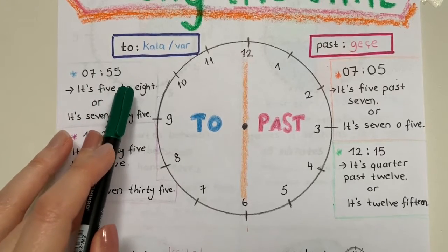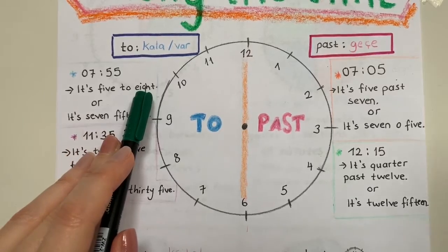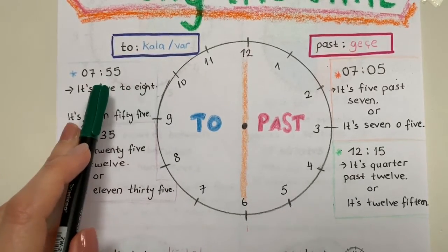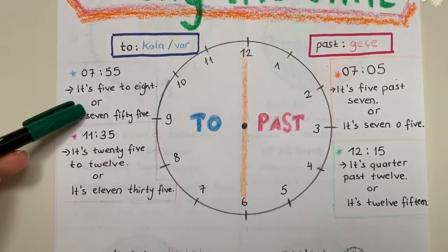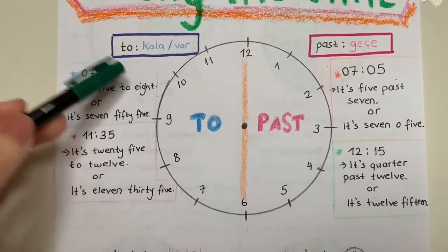onu söyleyip sonra 'to' kala dedim. Kaç var? Nereye yaklaşıyordu benim saatim? Sekize yaklaşıyordu. O zaman sekize beş var dedim. Ya da dijital olarak okumamı isterse, it is seven fifty-five, direkt gördüğüm sayıyı söyledim.